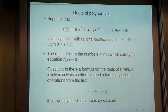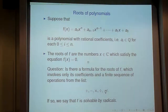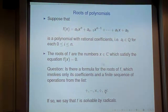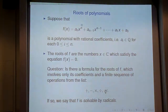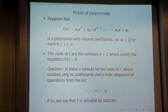The roots are the solutions to f(x) = 0; they're allowed to be complex numbers. If it is possible to express the roots of a polynomial in terms of its coefficients using those five operations — a finite sequence of them — then we say the polynomial is solvable by radicals, and that root is expressible by radicals.